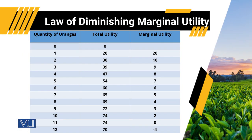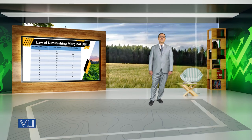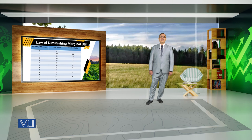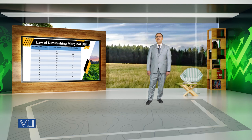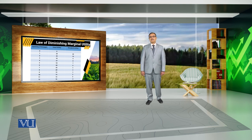For example, the same table that we have used earlier — in the first column we are reporting quantity of oranges, total utility in the second column, and marginal utility in the third column. By looking at the marginal utility, we can see that for each successive unit of orange, marginal utility decreases.